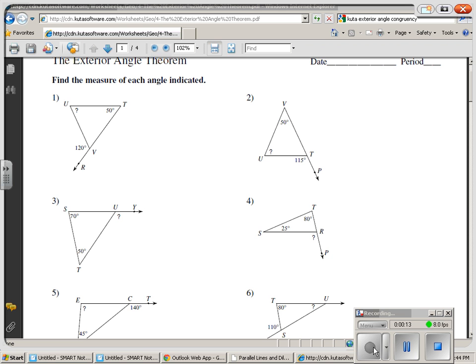The first thing that we're going to look at is how we can figure out all the angle measures inside of that triangle. So first of all, we know that 120 and this angle right here are going to equal 180. So we know that this angle is 60 degrees.